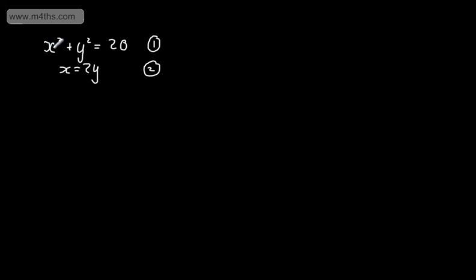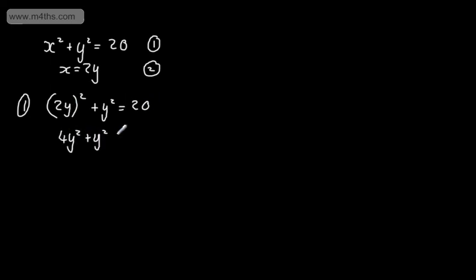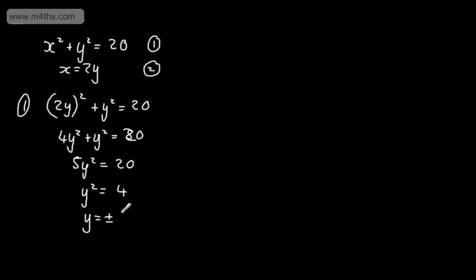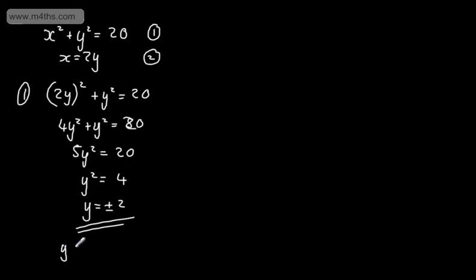Substituting x equals 2y into equation 1: (2y) squared plus y squared equals 20, which gives 4y squared plus y squared equals 20, so 5y squared equals 20. Dividing both sides by 5 gives y squared equals 4, so y equals plus or minus the square root of 4, which is 2. Therefore y equals 2 or y equals minus 2.